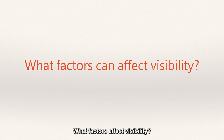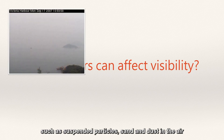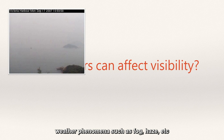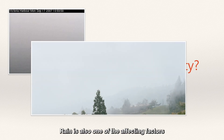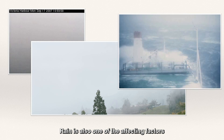What factors affect visibility? There are many factors, such as suspended particles, sand and dust in the air, weather phenomena such as fog, haze, etc. Rain is also one of the affecting factors. If you are at sea, splashing waves can also affect visibility.